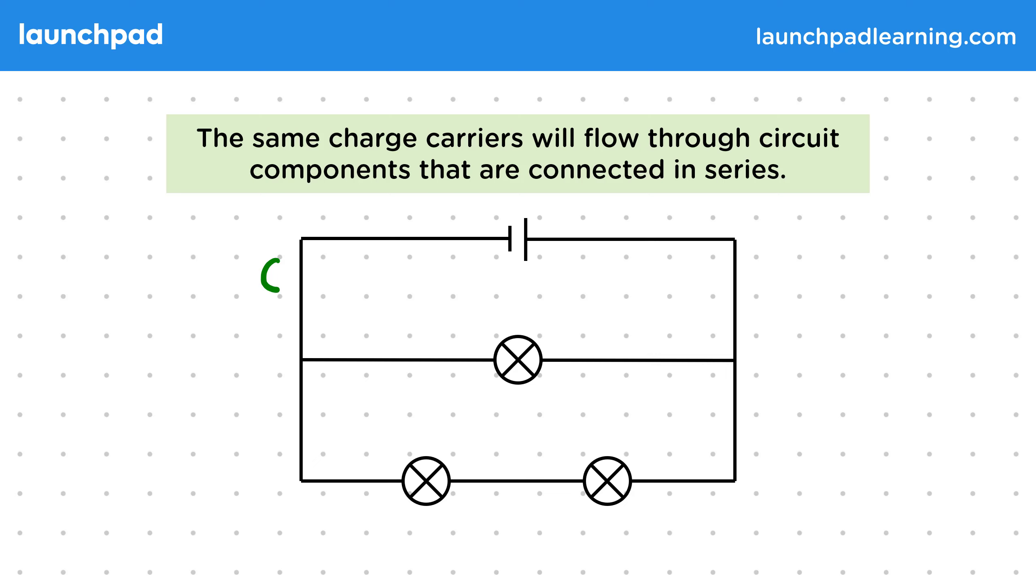Before the circuit branches we'll have a lot of charge carriers approaching this junction. Then these electrons split up so that some travel along the middle path and some travel along the bottom path. So we'll have different charge carriers passing through the lamps.